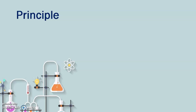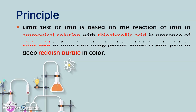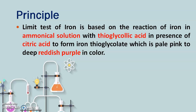The principle of the limit test for Iron: the limit test is based on the reaction of iron in an ammoniacal solution with thioglycolic acid in the presence of citric acid to form iron thioglycolic acid, which is pale pink to deep reddish-purple in color. If iron is present in the sample, it will react with the thioglycolic acid and in the presence of citric acid and ammonia solution give a reddish-purple color. That reddish-purple color is due to the formation of ferrous thioglycolic acid, also called ferrous mercaptoacid.